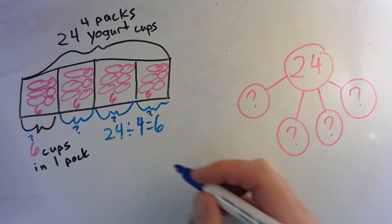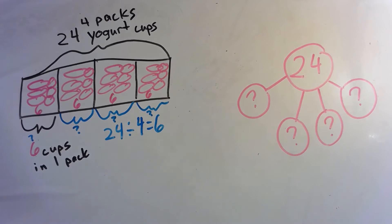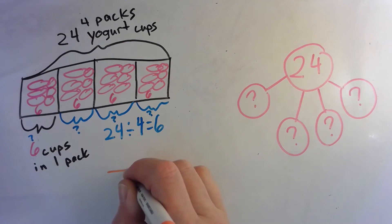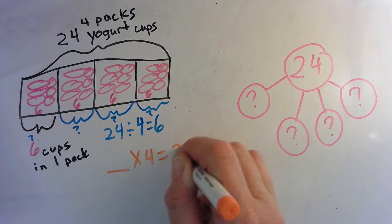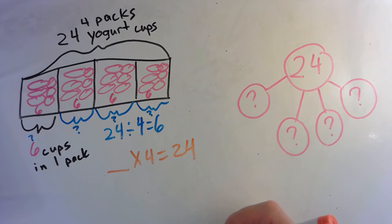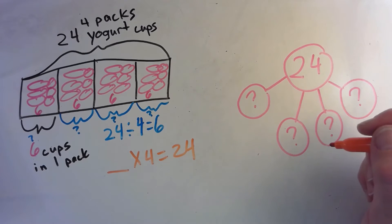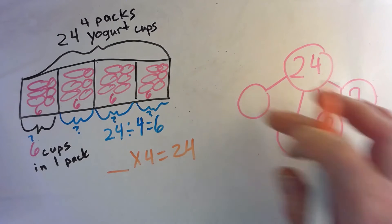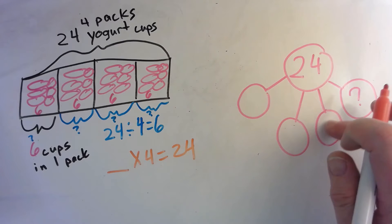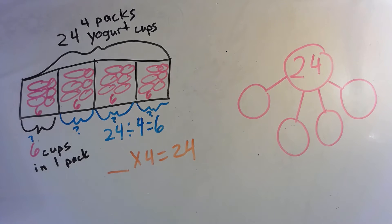Another way to write our division problem is: blank times 4 equals 24. Now we're going to skip count by fours to find the unknown factor. Each time we say four, I'll add a new part to my number bond.